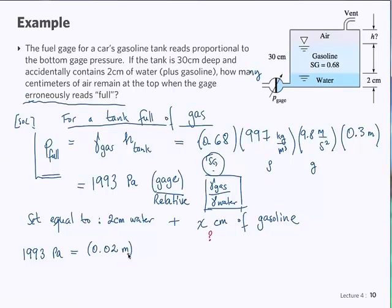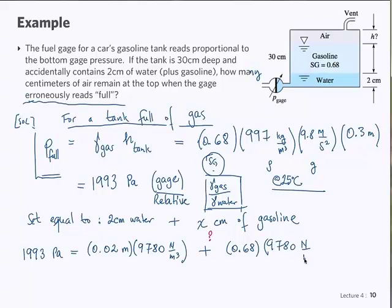And we have gamma of water. So this is rho G of water. I can put the number right here, 9780. This, by the way, is at 25 degrees Celsius, from a table. Newton cubic meter. Plus a certain weight of gasoline that we don't know. So, again, we have the specific gravity, 0.68 times 9780 gamma of water, Newton's meter cube. And the distance, x. We don't know. But x in meters, right?